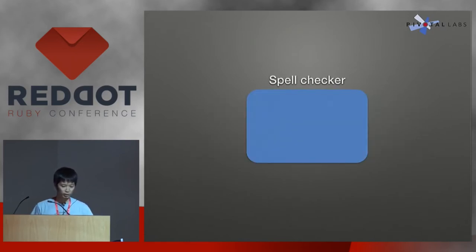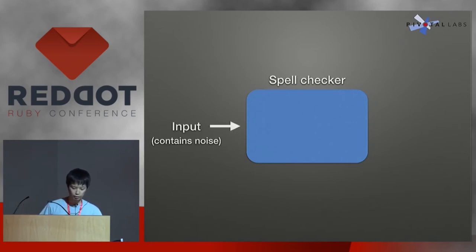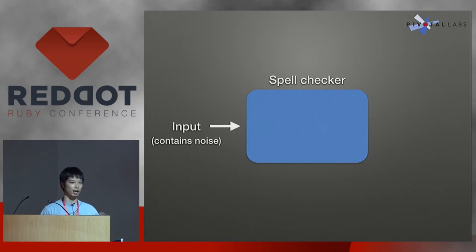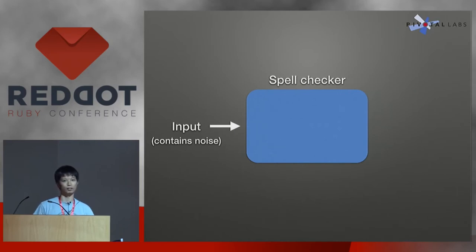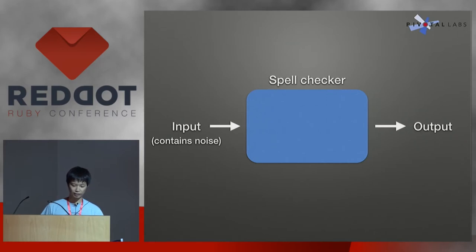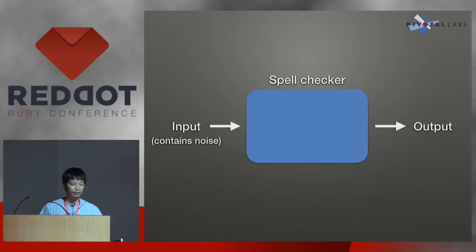So what's a spell checker? Basically, it has a function that takes a user input. The input is what people actually typed, and it usually has noise — like you make a typo, you misspelled something, or you don't remember a method name. The spell checker gives us back the output, which is what is most likely intended. So it's actually pretty simple: it takes an input and gives us back the correct one. But what's inside the black box in this case?